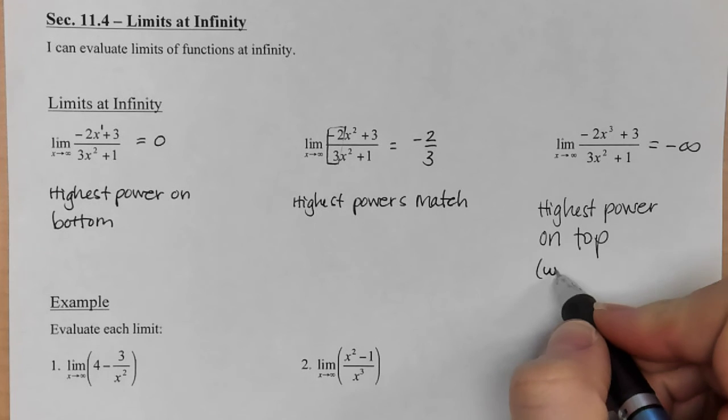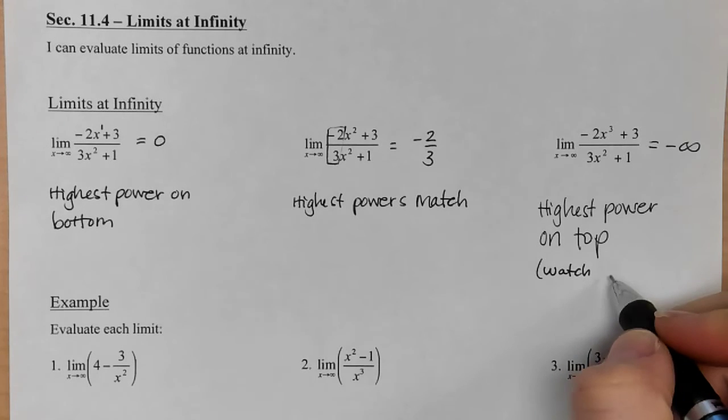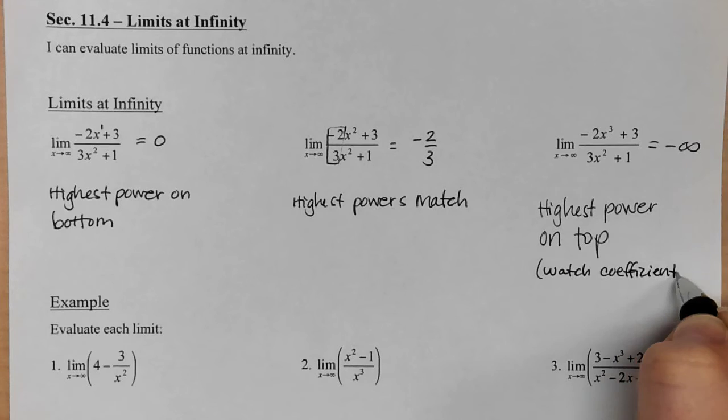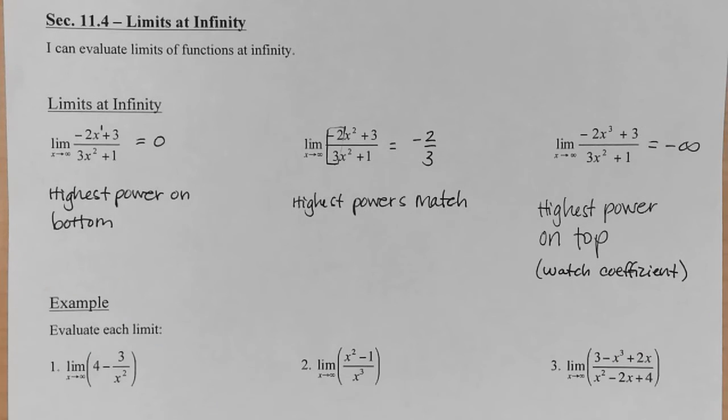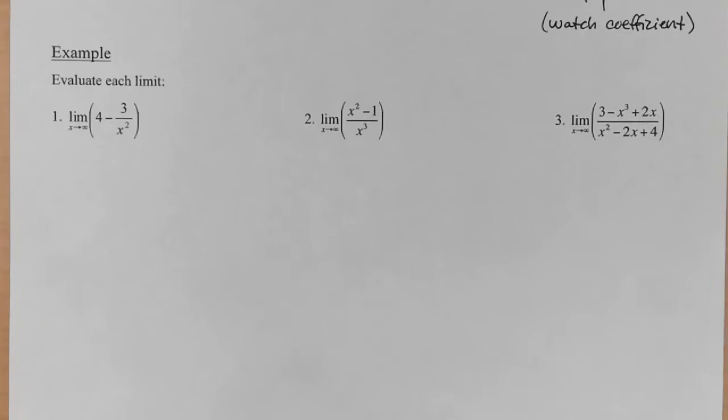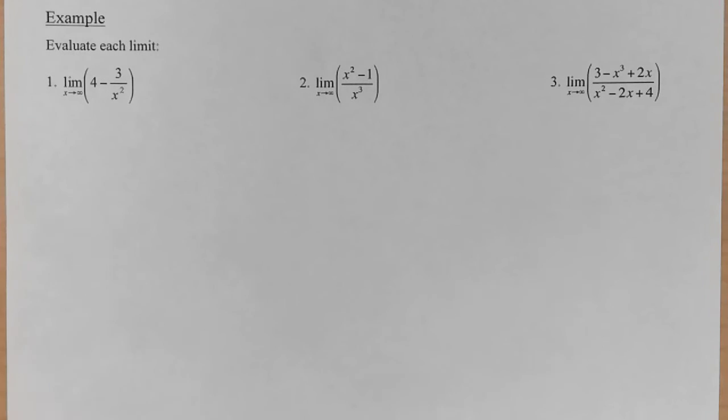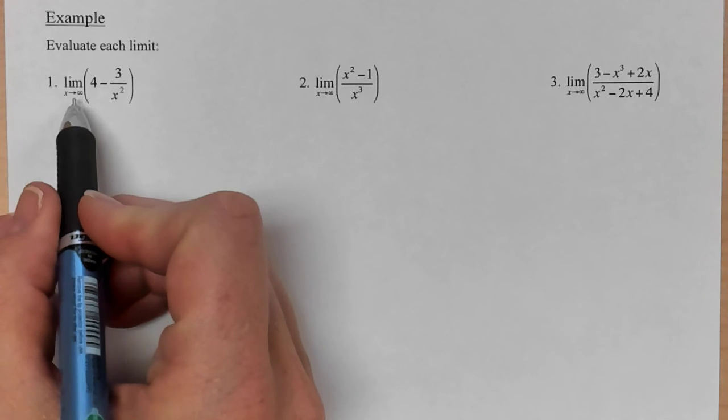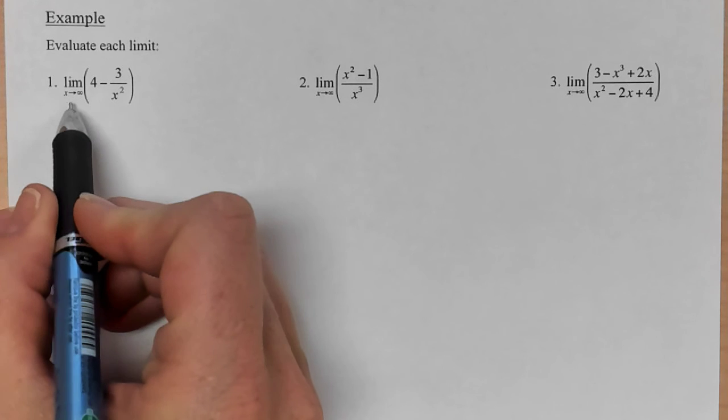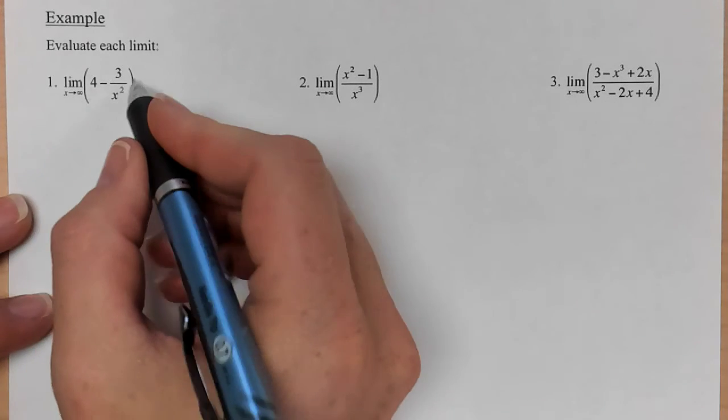So you need to watch the coefficient. It isn't just going to be infinity, it could be negative, just depending on what's happening. So we'll do a couple of examples to see it again. Still approaching infinity, make sure that you pay attention to this right away when you're doing problems for your homework or the test. And so we want to look at each one of these.